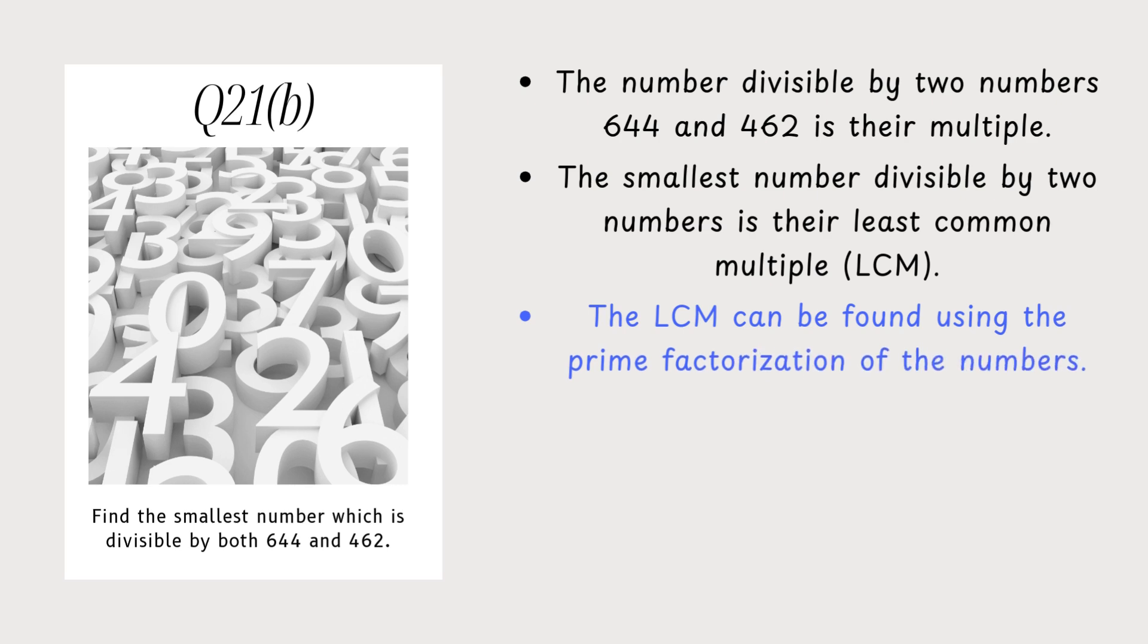Now, LCM can be found using the prime factorization of the numbers. For 644, we have 2² × 7 × 23, and for 462, we have 2 × 3 × 7 × 11. When we combine these, we take the highest powers of each prime number involved.